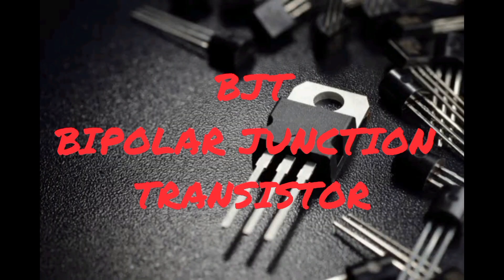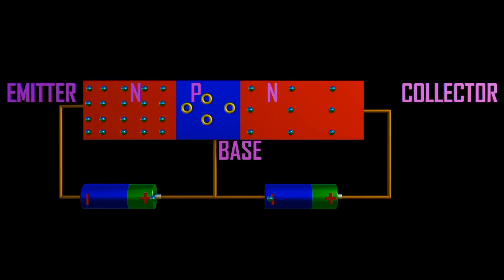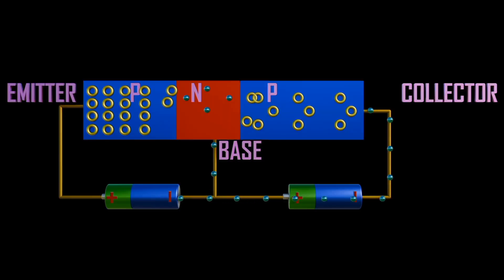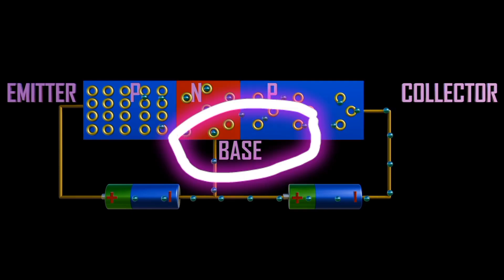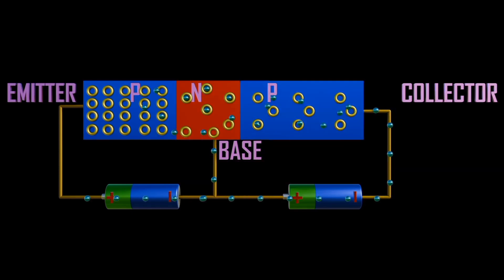BJT stands for bipolar junction transistor. It can be either NPN or PNP. It contains three regions: base, collector, and emitter.